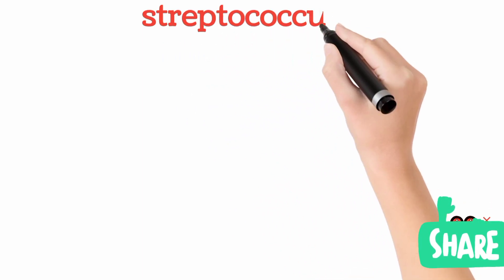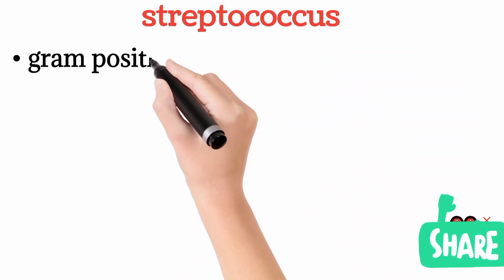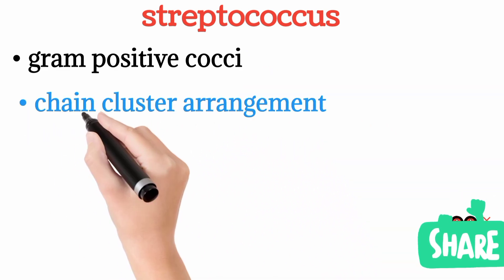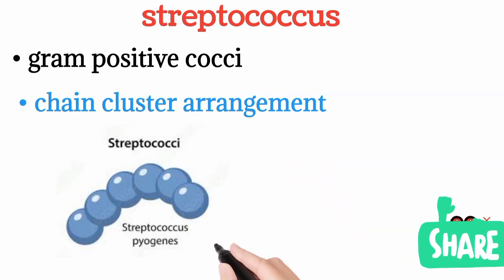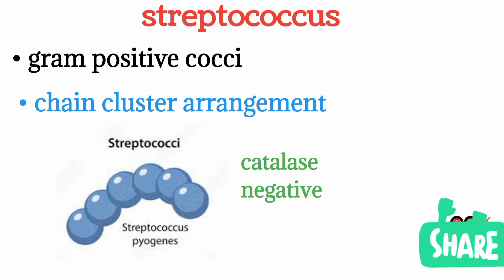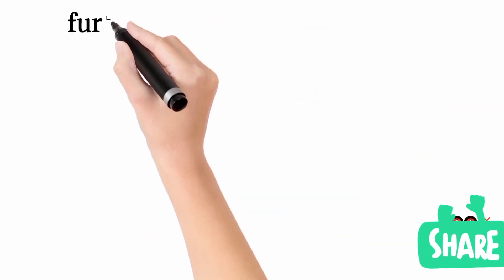Today we will talk about Streptococcus species. Remember, Streptococcus are gram-positive cocci and they have a typical chain-like arrangement. Staphylococcus species had a grape-like cluster arrangement whereas Streptococcus have a chain-like arrangement. Additionally, Streptococcus does not produce catalase enzyme — it is catalase negative. But remember, Streptococcus are catalase negative.